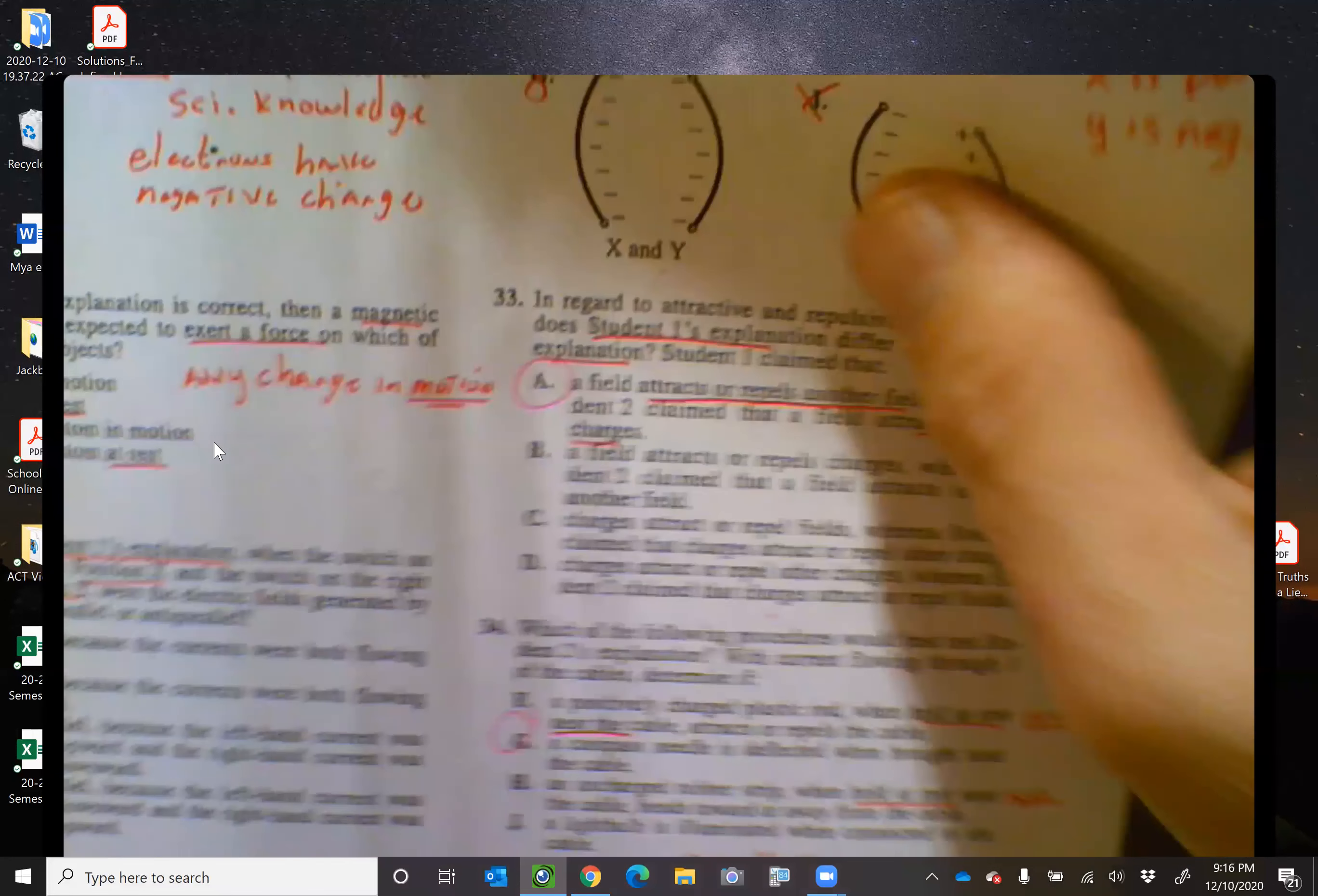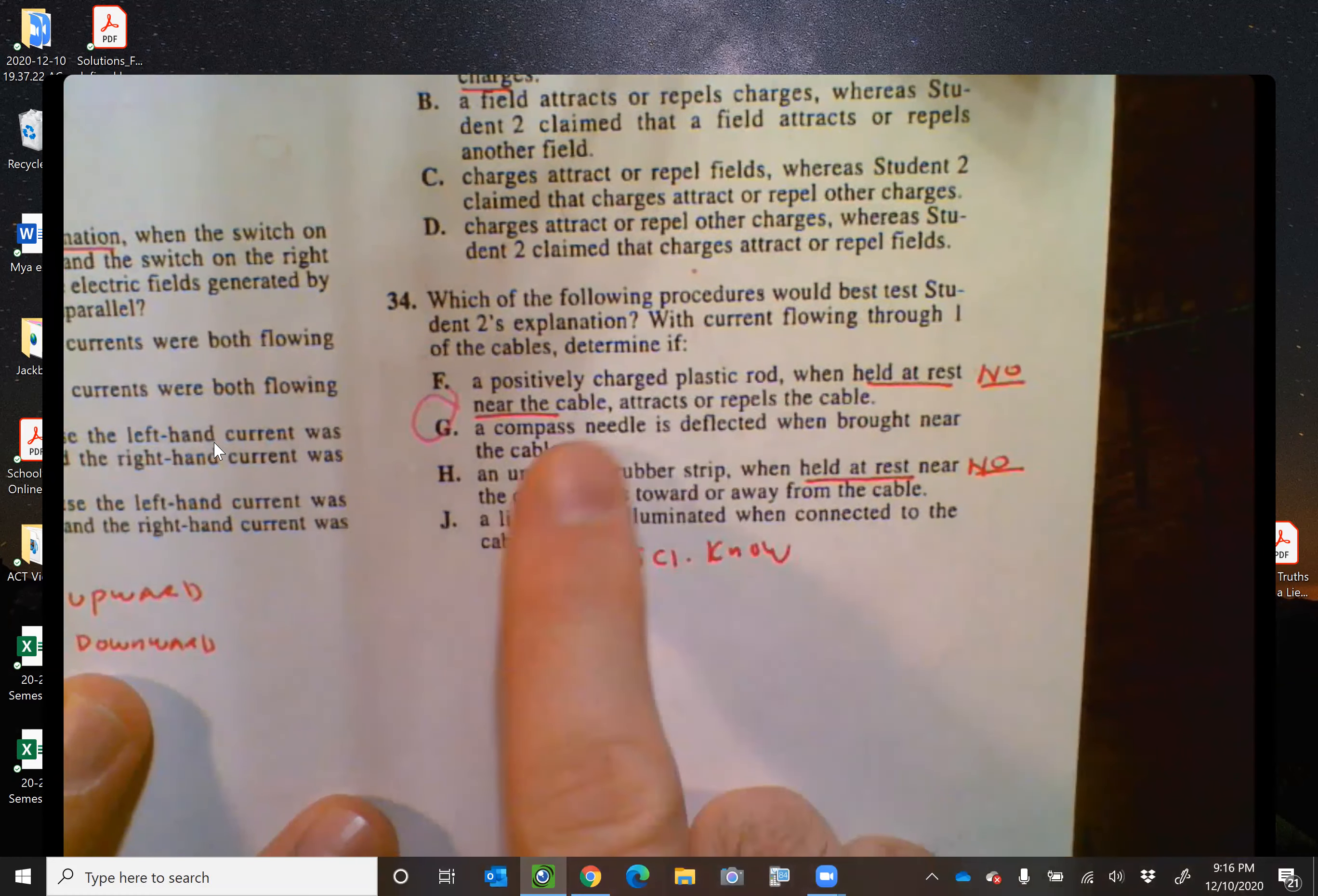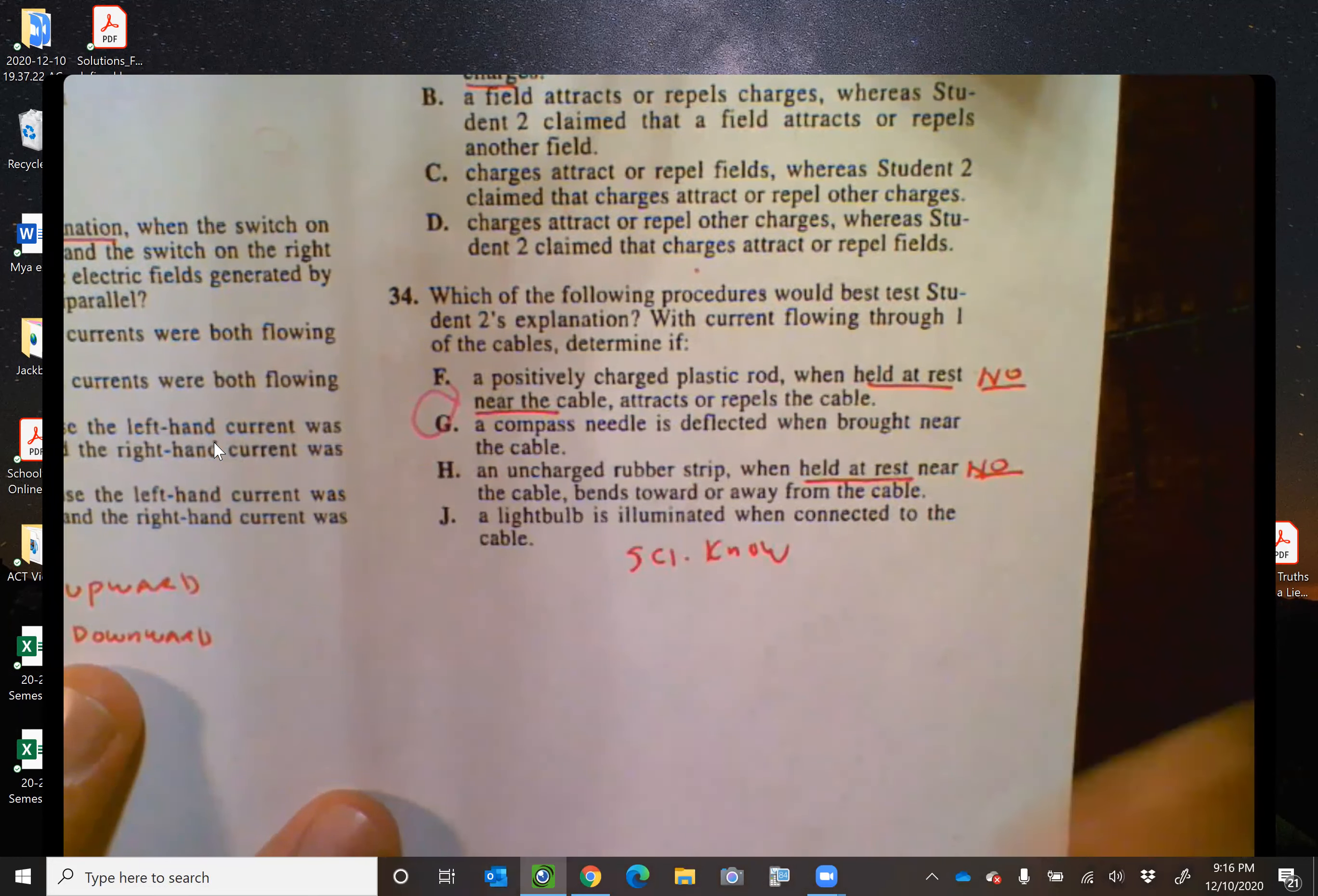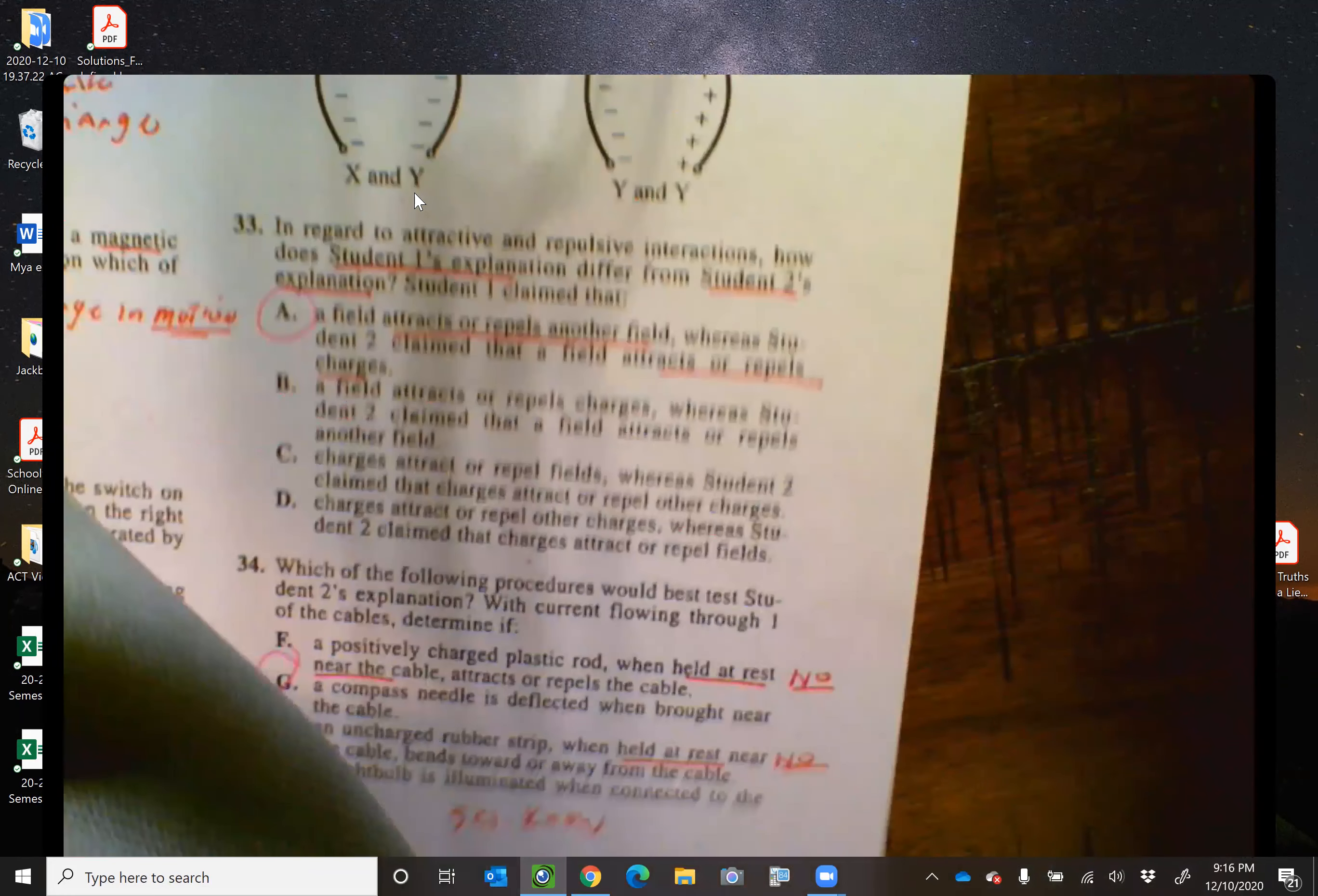And then the last one is a science knowledge question. Which of the fine procedures could best test student two's explanation? Well, plastic rod, I don't think those hold charges. An uncharged rubber strip, rubber doesn't conduct the charge. A light bulb? No. Compass needle. Yeah. Compass needle would be the one that would do. Letter G. Okay, were there any questions on this passage?